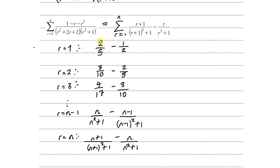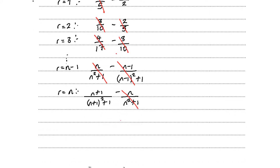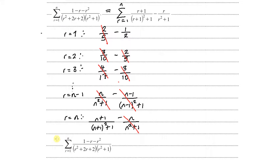Adding all these terms, we see telescoping cancellations: 2/5 cancels with minus 2/5, 3/10 cancels with minus 3/10, and so on — each positive term cancels with the negative term in the next row. We are left with minus 1/2 from the very first term and (n+1) over (n+1)² plus 1 from the last term. Therefore the summation equals minus one-half plus (n+1) over (n+1)² plus 1.